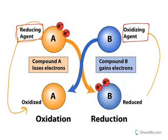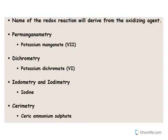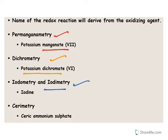The titrations which involve reduction and oxidation are known as redox titrations. Based upon the oxidizing agent used, the names are given: if potassium permanganate is used it is called permanganometry; if potassium dichromate is used it is known as dichromatry; if iodine is used it is called iodometry or iodimetry; and if ceric ammonium sulfate is used it is known as cerimetry.